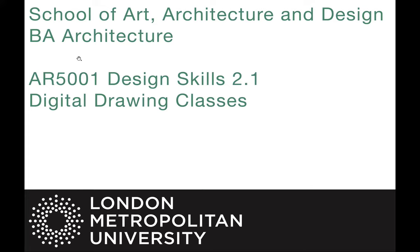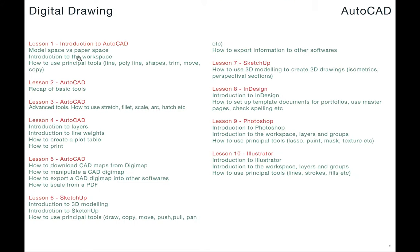Welcome to lesson seven of digital drawing classes. Today we're going to carry on looking at SketchUp. Last week we had an introduction to SketchUp and how to use some of the principal tools, and this week we're going to look at how we can use SketchUp to create some architectural drawings, including isometric drawings, sections, perspective sections, and 3D views — combining skills learned from AutoCAD and SketchUp.